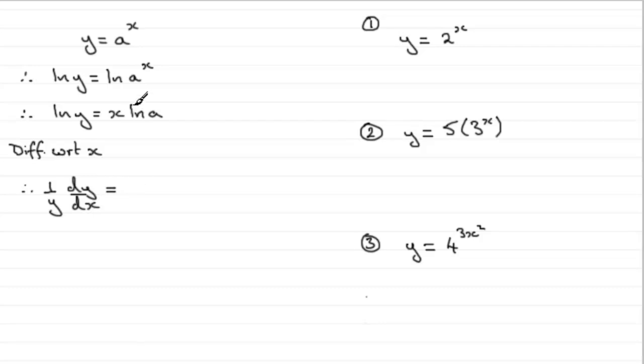Now when it comes to differentiating this side here, I get so many people who want to differentiate the natural log of a and say it's 1 over a. It's not. Remember, a is a constant. So that means the natural log of a constant will also be a constant.